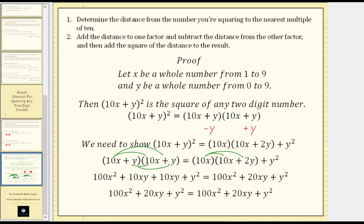Back on the left side, notice how we have two like terms: 10xy plus 10xy is 20xy, which shows the expression on the left equals the expression on the right. This proves the shortcut method is valid for evaluating the square of any two-digit number. Thank you for watching.